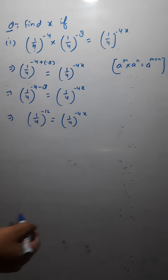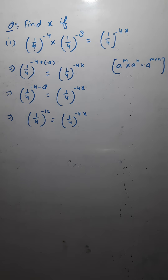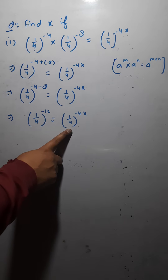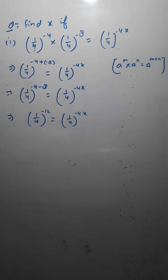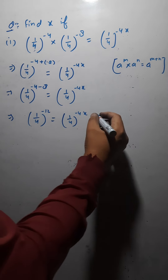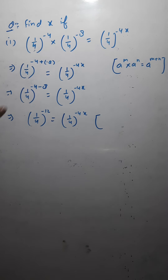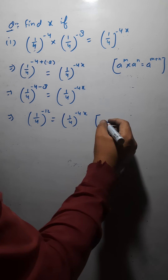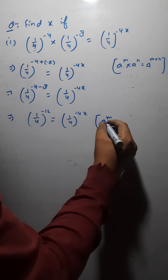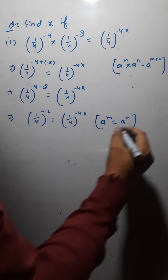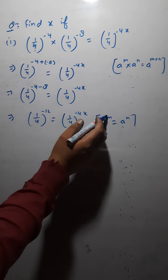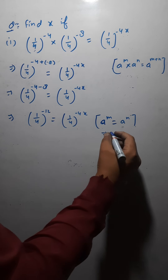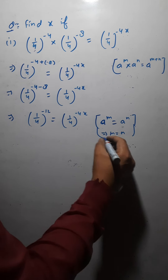It equals (1/4) raised to the power minus 4x. Now you have to find out the value of x. If the bases are same, we can directly equate the exponents. Remember this formula: if a raised to the power m equals a raised to the power n, then since the bases are same, the exponents are also equal, so m equals n.